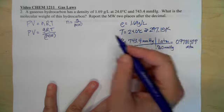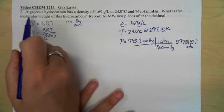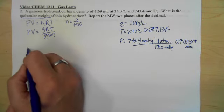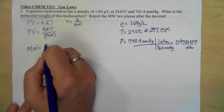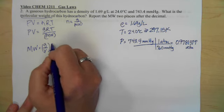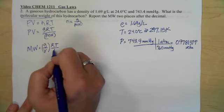Now what we're trying to find in this problem is the molecular weight. So if we go back over here, the molecular weight is equal to grams divided by volume which we know is density RT divided by P.